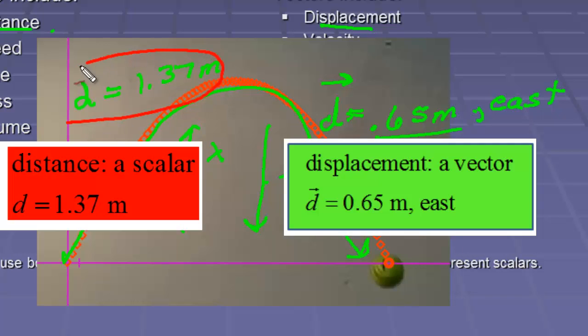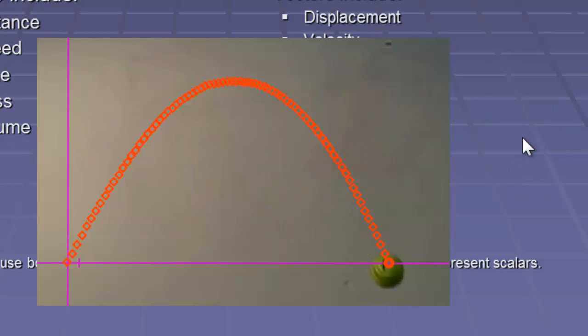Looking at this, we have just a number or a magnitude. Looking at this, we have a number, which is the magnitude, as well as a direction. And that's really the defining difference between a vector and a scalar. A vector has to have a direction along with it.